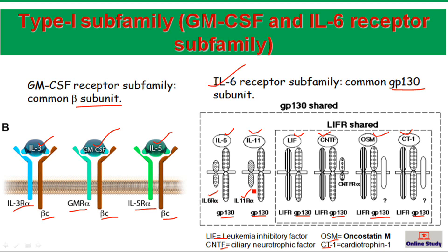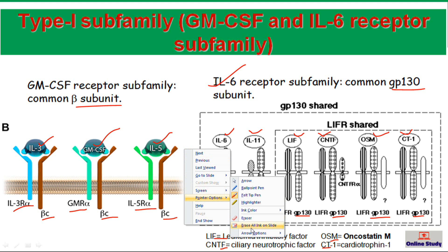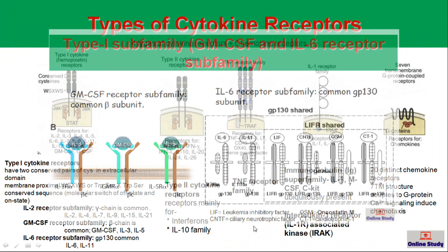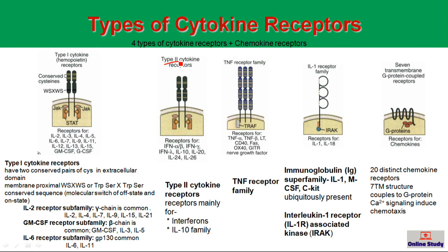Next is the Type 2 cytokine receptor. In this receptor only Type 2 cytokines can bind. This type of receptor has a total of 4 cysteine residues, but they are distributed in two different domains. Unlike the Type 1 cytokine receptor, they do not have the conserved WSXWS sequence. This type of receptor can bind to TNF, interferons, and the IL-10 family, and also transmits signals inside the cell via the JAK-STAT pathway.